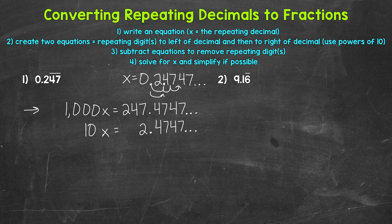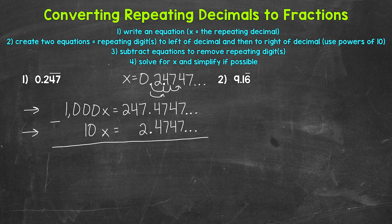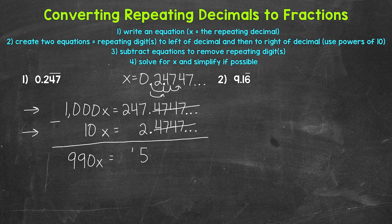Here we have the repeating digits just to the left of the decimal, and here we have the repeating digits just to the right of the decimal. That brings us to step three, where we subtract these equations to remove the repeating digits 4 and 7. Starting with 1,000x minus 10x, that gives us 990x. On the right side, the repeating digits 0.47 repeating minus 0.47 repeating cancel each other out and equal zero. So 247 minus 2 gives us 245.